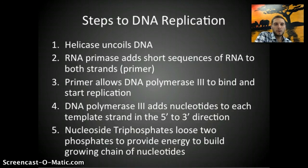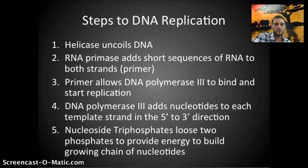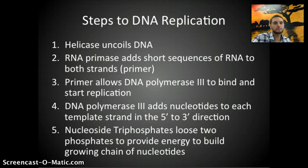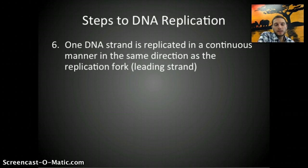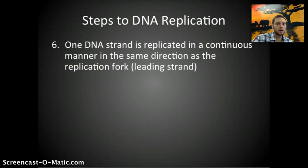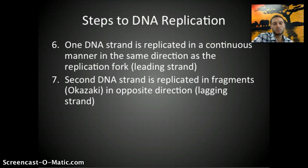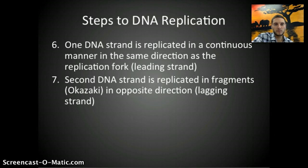In order for nucleotides to be bonded together, energy is needed. Molecules called nucleoside triphosphates — basically nucleotides with two additional phosphates — lose two of their phosphates, providing the energy to build the growing chain. One DNA strand is replicated continuously in the same direction as helicase — that's the leading strand. The second strand, the lagging strand, is replicated in fragments called Okazaki fragments, named after the researcher who discovered them, because DNA polymerase must move in the opposite direction of helicase.